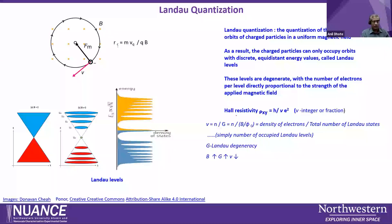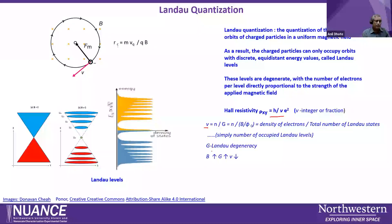The resistivity from the previous slide is given in terms of ν, which is the density of electrons over G, the Landau degeneracy — the total number of Landau states. Simply put, ν is the number of occupied Landau levels. As we increase the magnetic field, the degeneracy also increases because it is proportional to B, so ν will decrease.